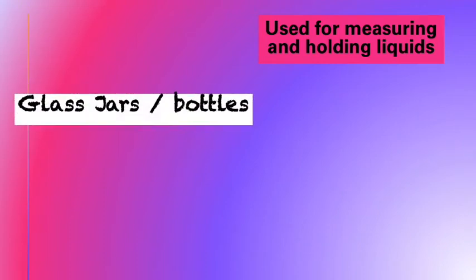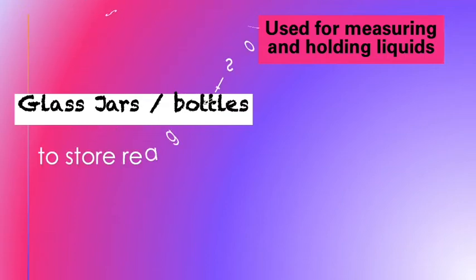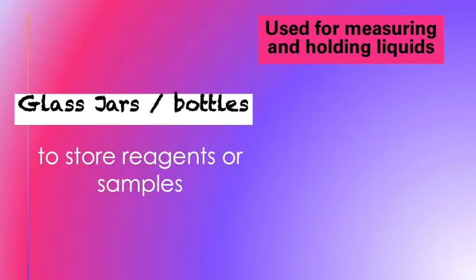The next one is glass jars or bottles. They are used to store reagents or samples. Here are the pictures of jars and bottles.